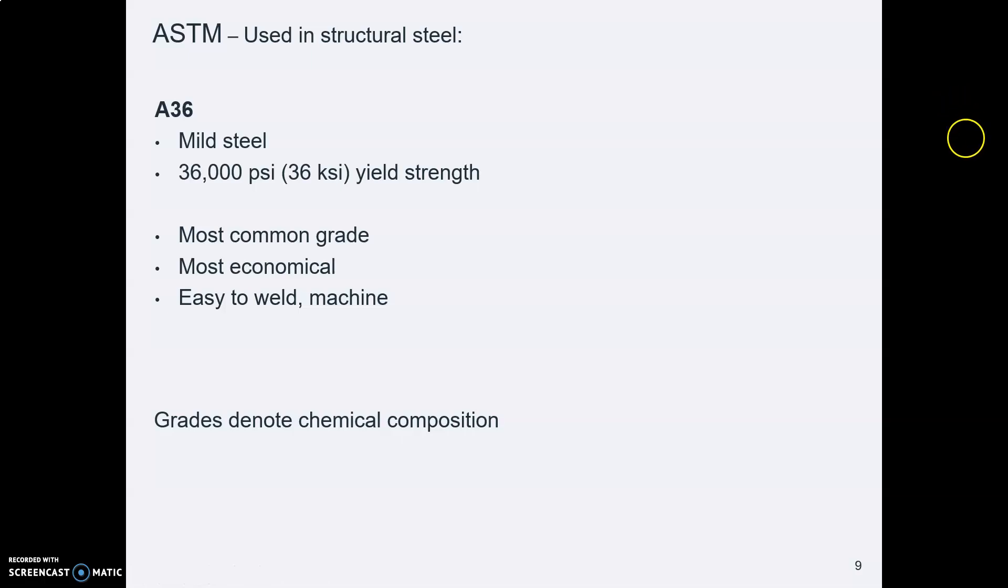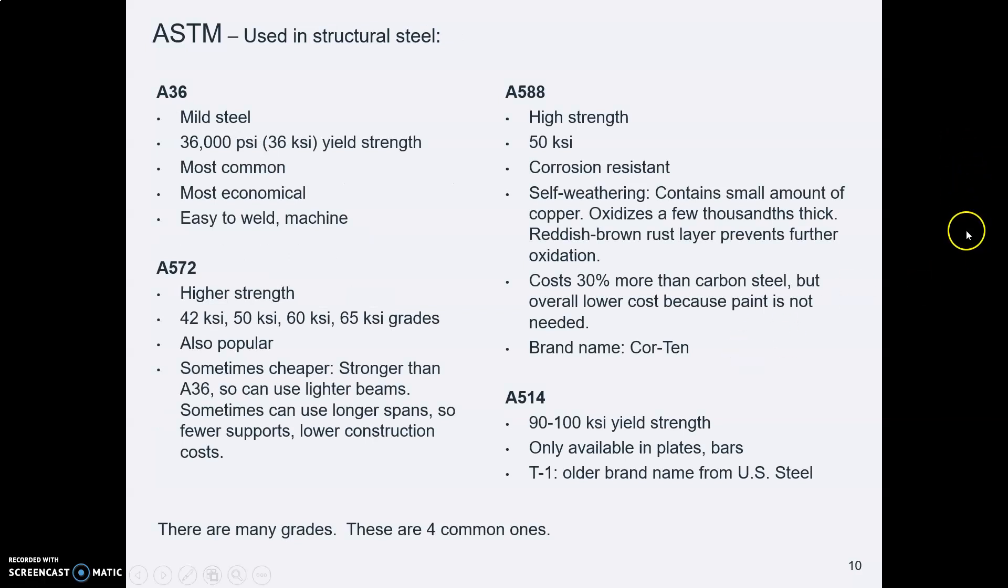Mild steel is the most common steel you encounter. Here are some other ASTM grades, some higher strength steel. A588, the brand name is Cor-Ten. That's that weathering steel that looks rusty. A572 and 514 are some high strength steels. And there are, as you might imagine, many others.